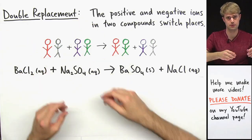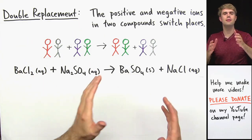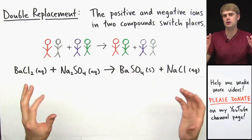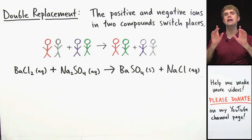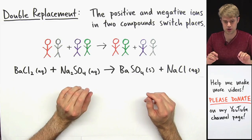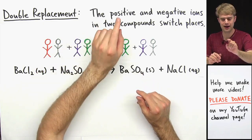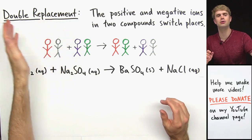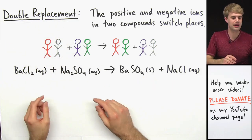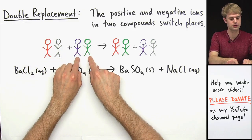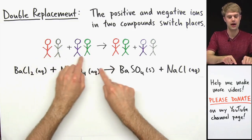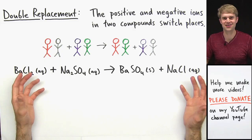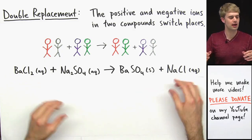Finally, here's the double replacement reaction. I should mention that single and double replacement reactions are sometimes also called single displacement and double displacement, just in case your teacher or textbook uses a different term. Double replacement reactions are not nearly as heartbreaking as single replacement reactions, because in a double replacement reaction, the positive and negative ions in two compounds just switch places. Nobody gets kicked out. It's like two different pairs of dancing couples switching partners — nobody ends up against the wall.